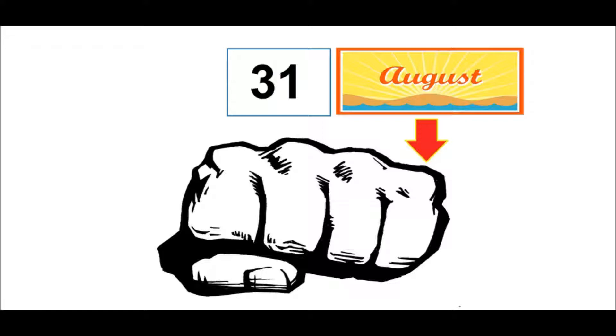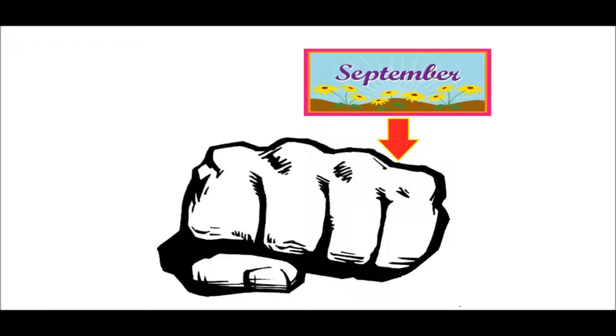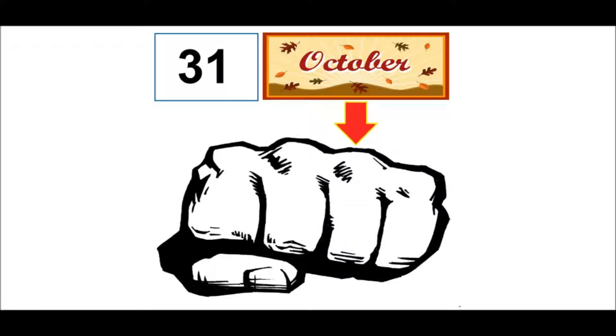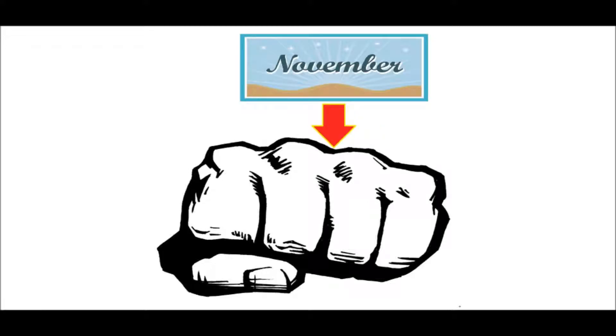We're going to move back across the hand, going down into the next valley, which is 30 days or less — and that's September, which is 30 days. Now we move up to another knuckle, which is 31 days, and here we have October. Then back down into the valley, which is 30 days or less, and here we have November, which is 30 days.